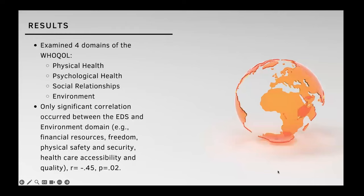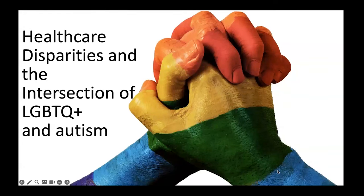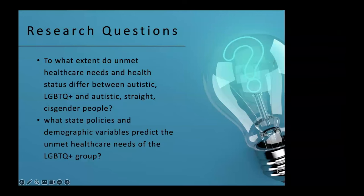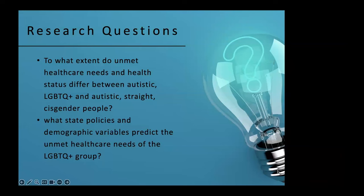Now a shift to a published study trying to understand the intersection of autism and sexual and gender diversity, and how that is impacting outcomes. We were asking two questions: one, to what extent do unmet healthcare needs and health status differ between autistic LGBTQ individuals and autistic straight cisgender individuals? And second, what state policies and demographic variables predict the unmet healthcare needs of the LGBTQ group?